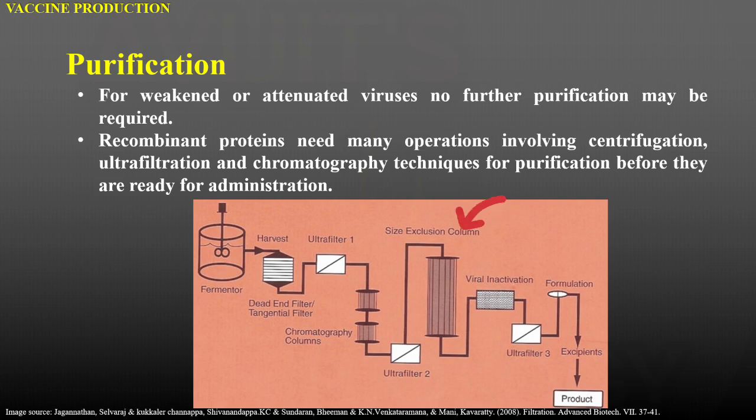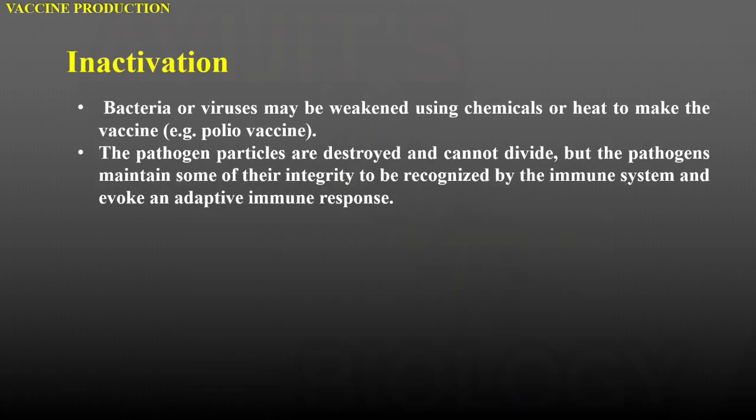After that, viral inactivation takes place. Bacteria or viruses may be weakened using chemicals like formaldehyde compounds or heat to make the vaccine, like in the polio vaccine. Covaxin, made for COVID-19, is also an inactivated vaccine. The pathogen particles are destroyed and cannot divide, but the pathogen maintains some of its integrity to be recognized by the immune system and evoke an adaptive immune response.